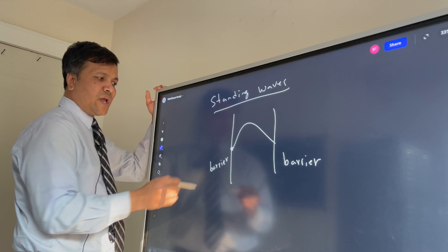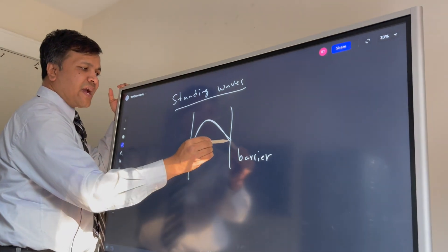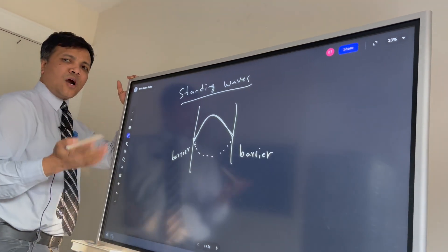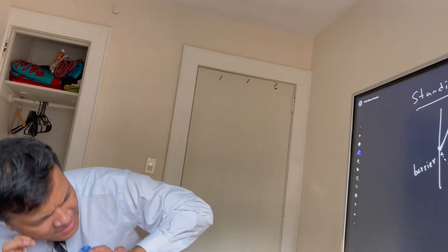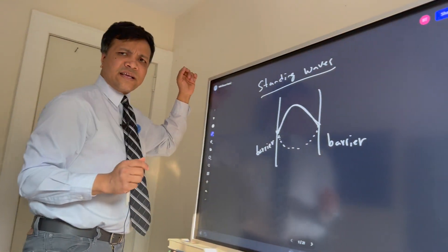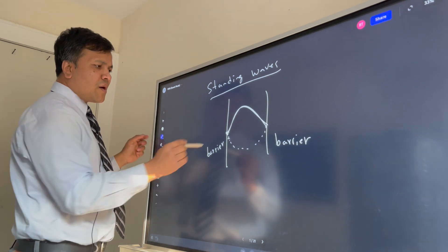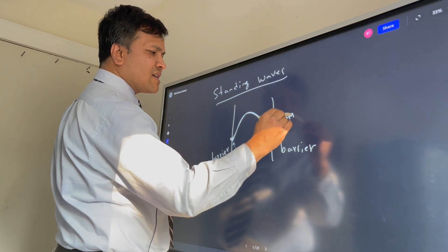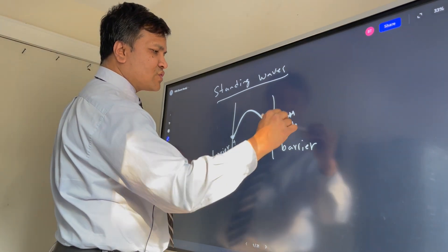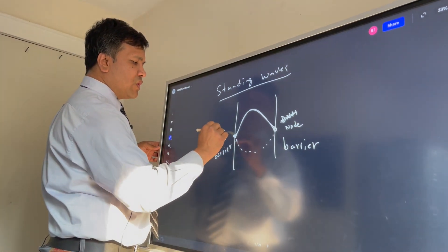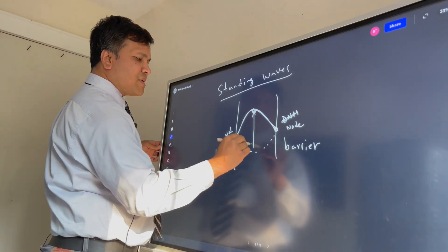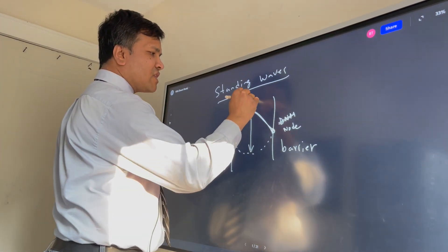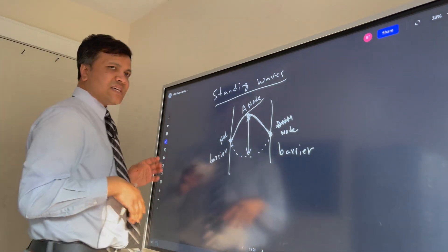With a barrier, you have a beginning and an ending. When the incident wave hits the barrier, it bounces back with the same magnitude but in the opposite direction. We perceive this as a standing wave. The two ends do not move — we call them nodes. The point of maximum displacement moves the most — we call it an anti-node.